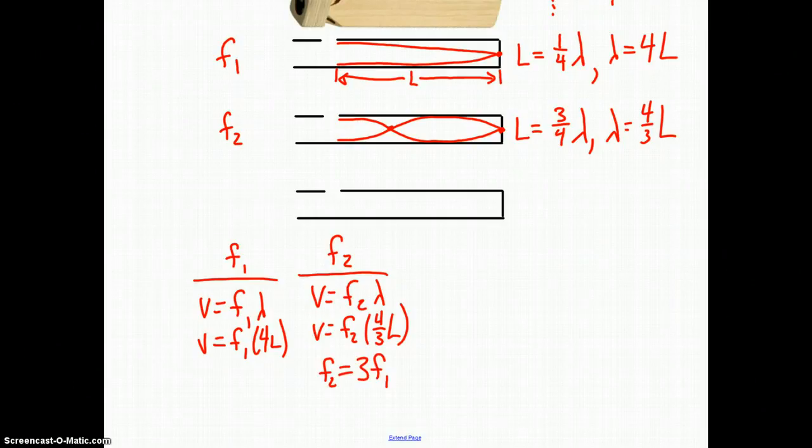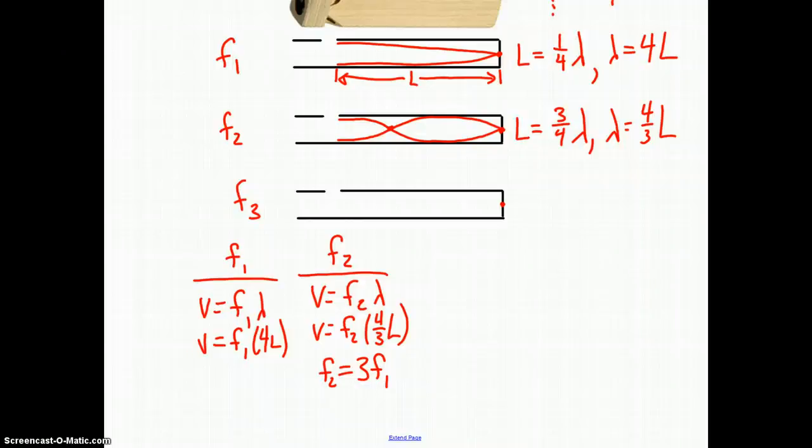And again, if you don't understand where these calculations are coming from, make sure you ask in class. The third harmonic, what would that look like inside the air column? We still have to have a node here. I think you're catching on that now we would have to have two anti-nodes in between the hole and the fixed end on the right side.